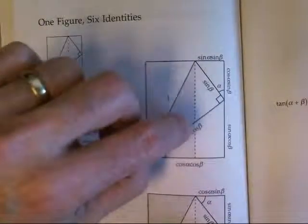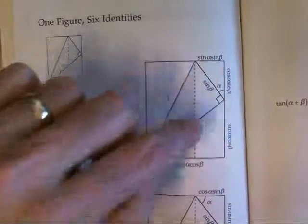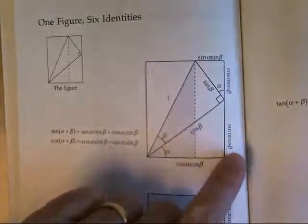With the angle b there and the hypotenuse of one, this is cos b, that's sine b. This is the hypotenuse for this triangle down here. This is cos b times the sine of alpha. This is cos b times the cosine of alpha. And likewise up here, that angle. Anyway, this is the one we've already done.